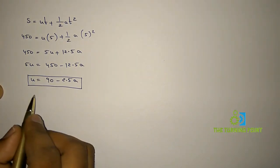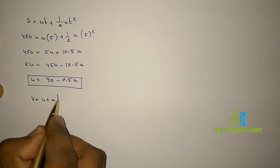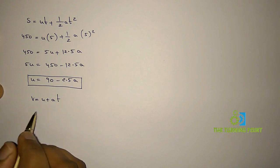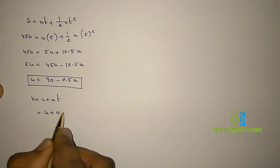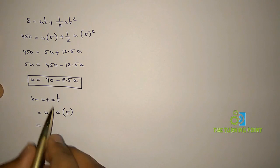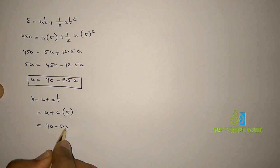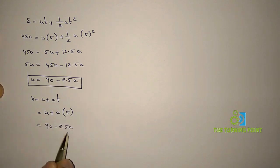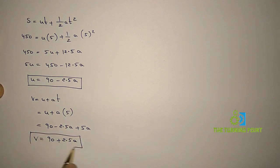Now let us find the final velocity of the first interval. From v = u + at, the final velocity v = u + a×5. Substituting u = 90 − 2.5a, we get v = (90 − 2.5a) + 5a = 90 + 2.5a. This is the final velocity at the end of the first interval.